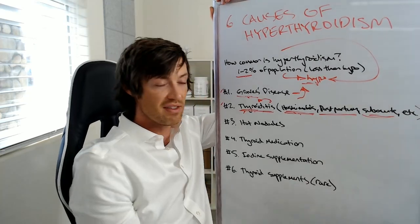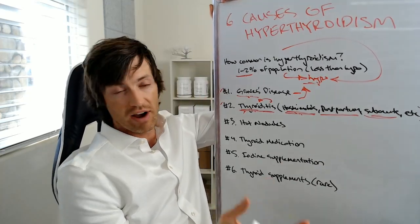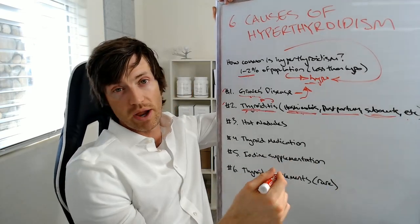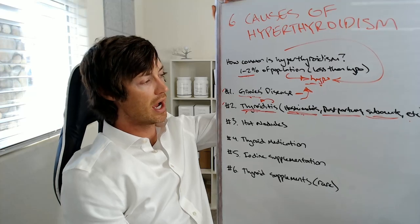But what we should understand is Hashimoto's, while it may cause bouts of hyperthyroidism, does not cause sustained episodes of hyperthyroidism. You can also get periods of hyperthyroidism just because you were pregnant previously. That's called postpartum thyroiditis. You can have infections of the thyroid gland. That's called subacute thyroiditis. It can be viral, bacterial, even fungal as well.